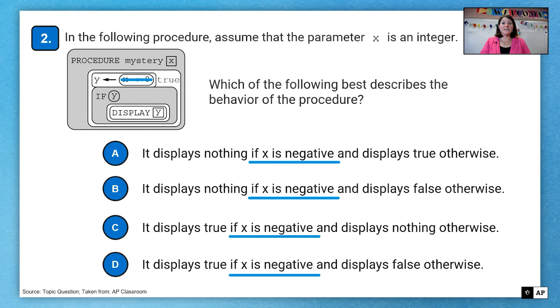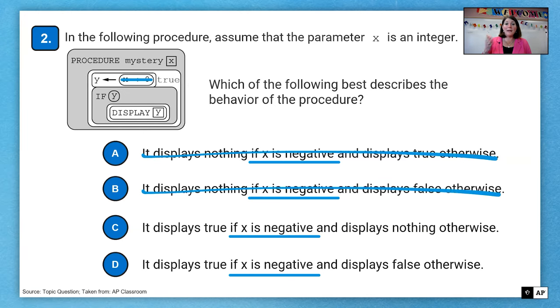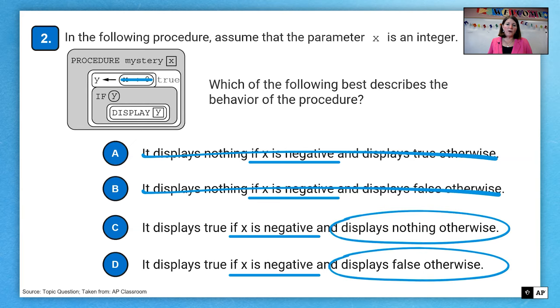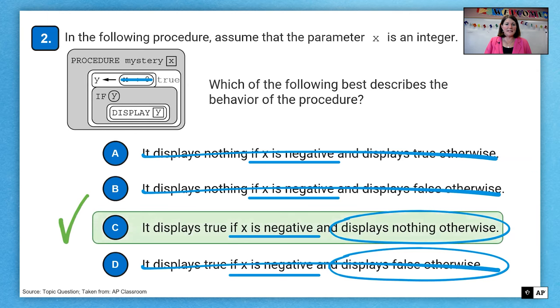That means if Y is true, it will display Y. So therefore, I can look at my four options and say, A and B are eliminated because it will display Y. So Y is true. It displays true if X is negative. And what does it do otherwise? Nothing because there is no else. So therefore, our other part, it displays nothing. That means our answer is C.